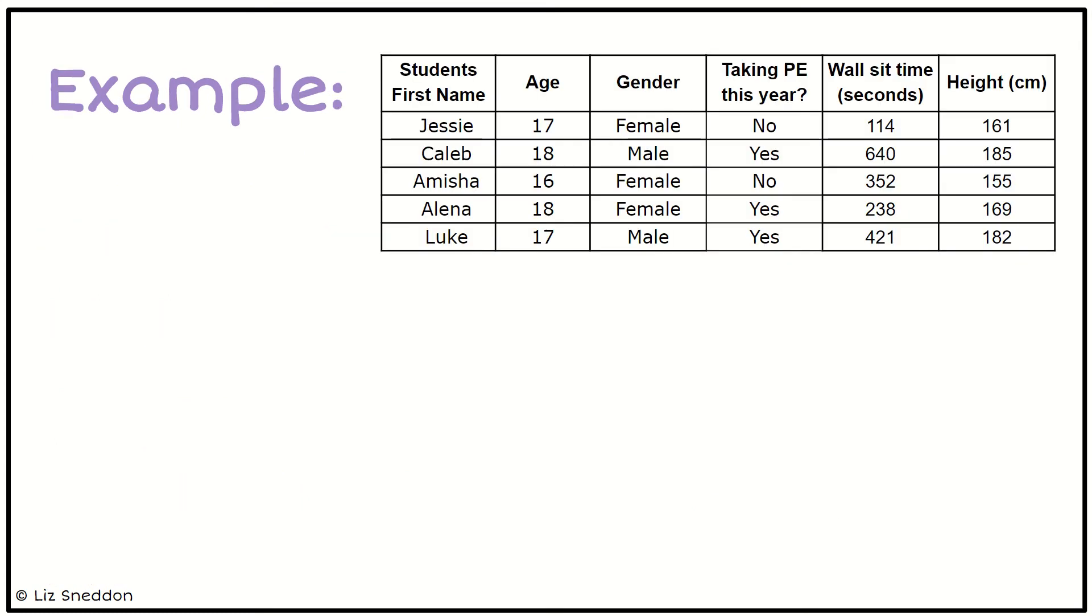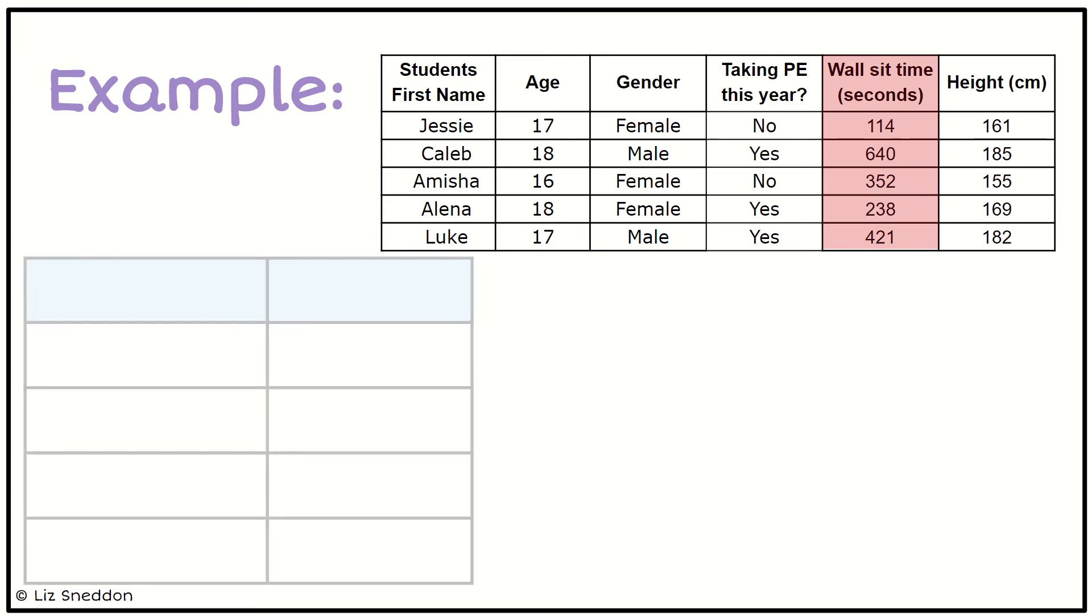Let's have a look at an example. Let's try and draw a graph of the wall sit times. The first thing I need to do is make myself a frequency table because I need that data summarized before I can put it into a graph.